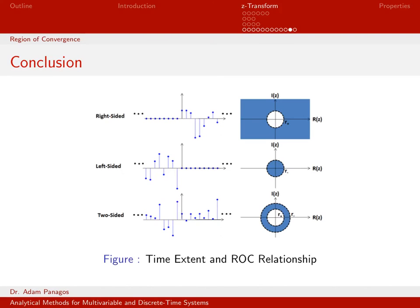In terms of pictures: when dealing with a right-sided signal — zero for all negative time and non-zero for positive time — the region of convergence is always outside the circle, outside this R plus circle. A left-sided signal is zero for all positive time including K equals zero, and non-zero for negative time.